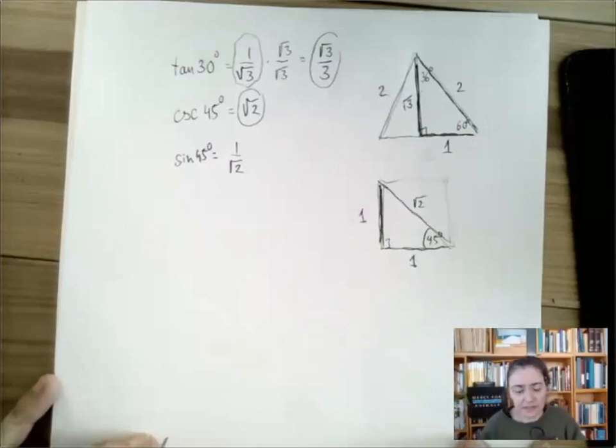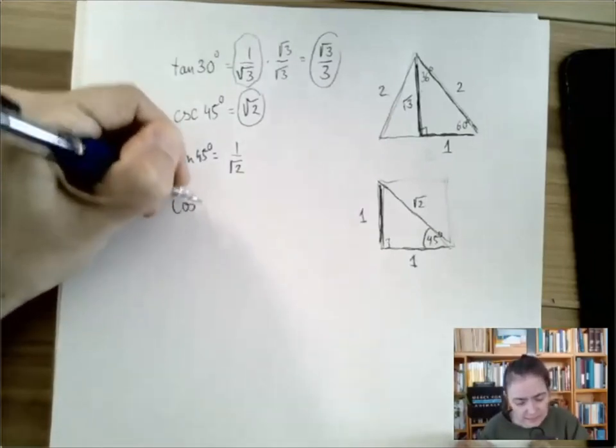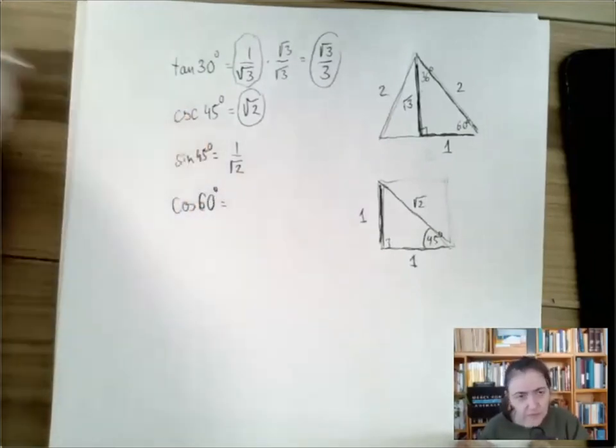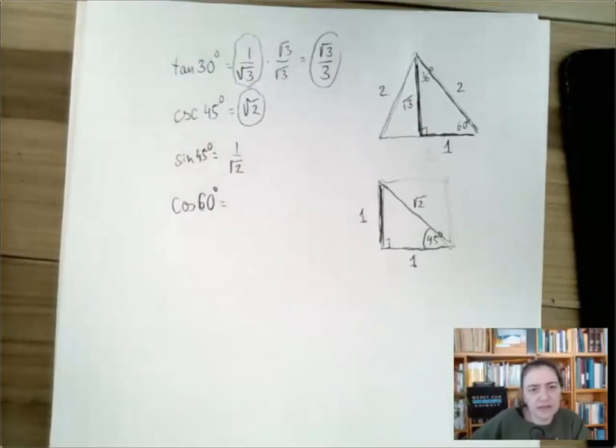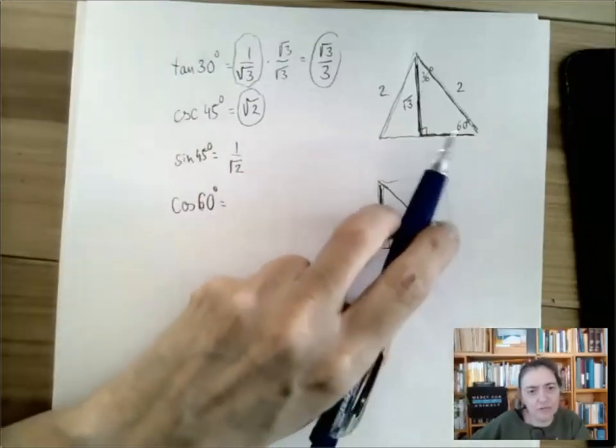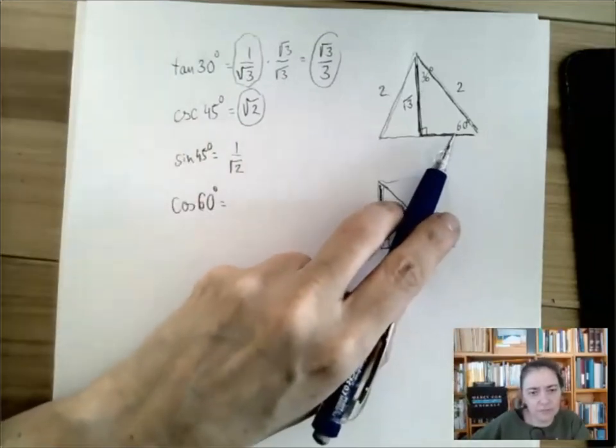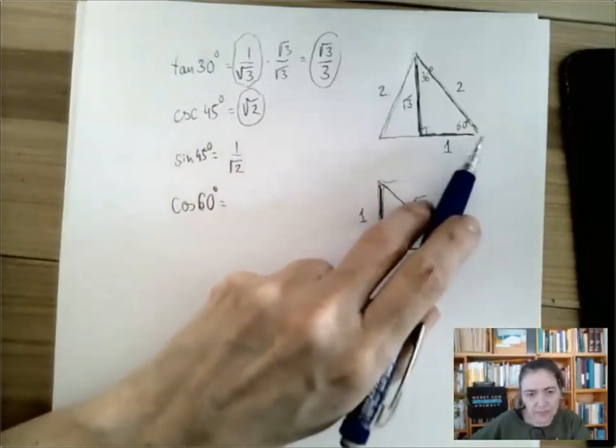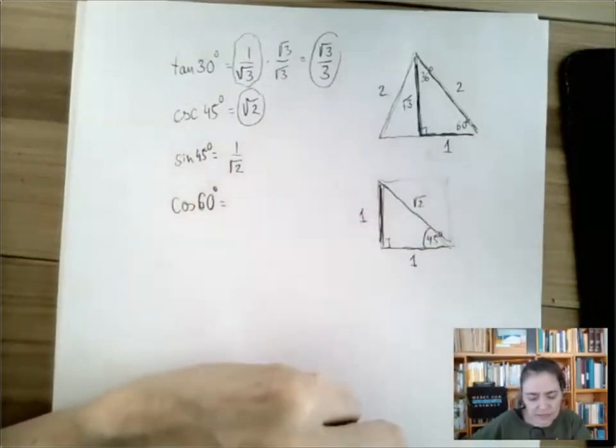Okay, what else do we have to find? We have to find cosine 60. See, the nice thing about the 30-60-90 triangle is that it brings you all trigonometric function values of both 30 and 60. We don't have to draw a new triangle. We just need to look at the same triangle.